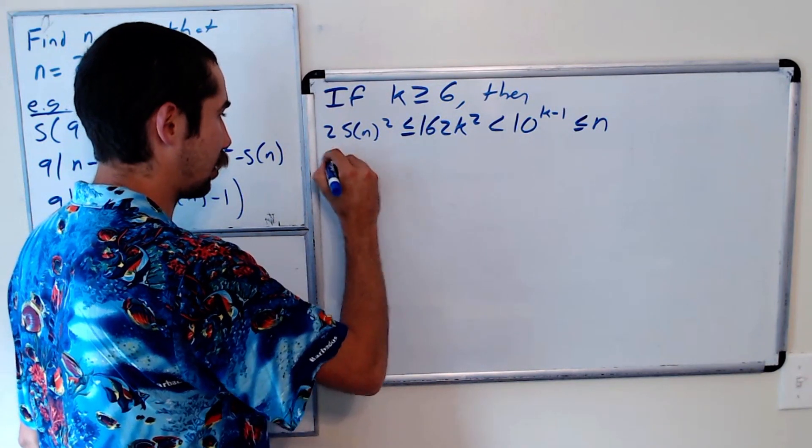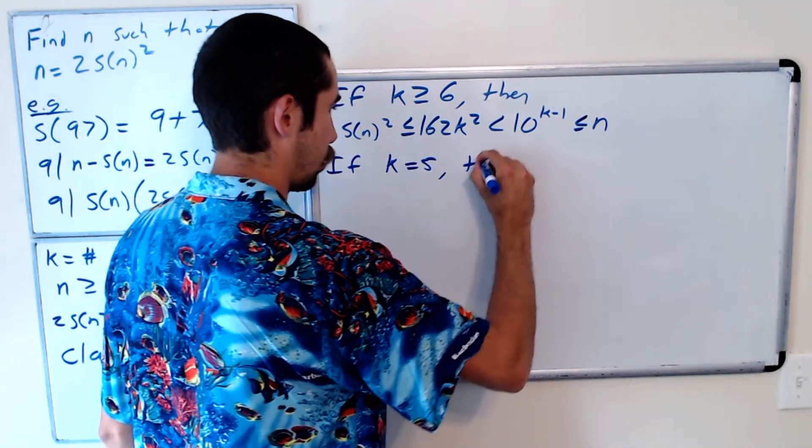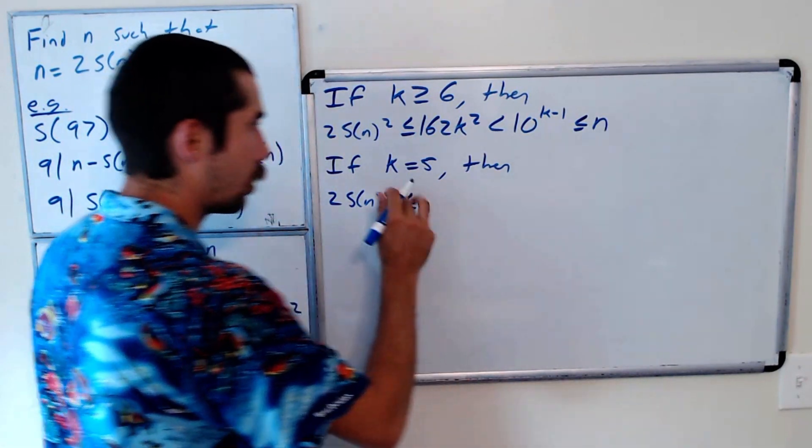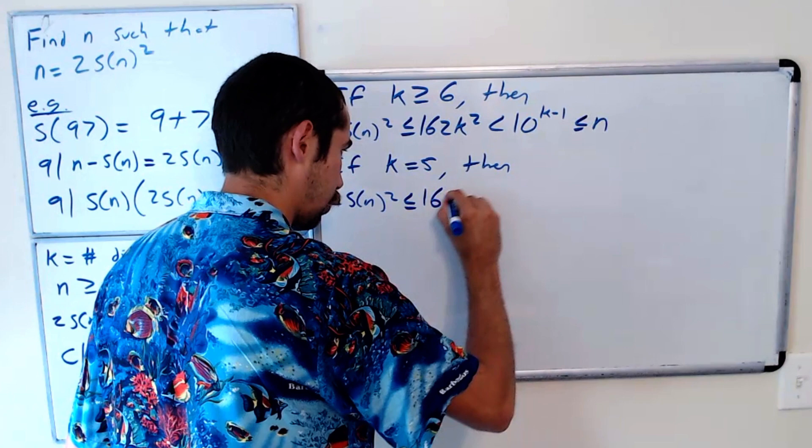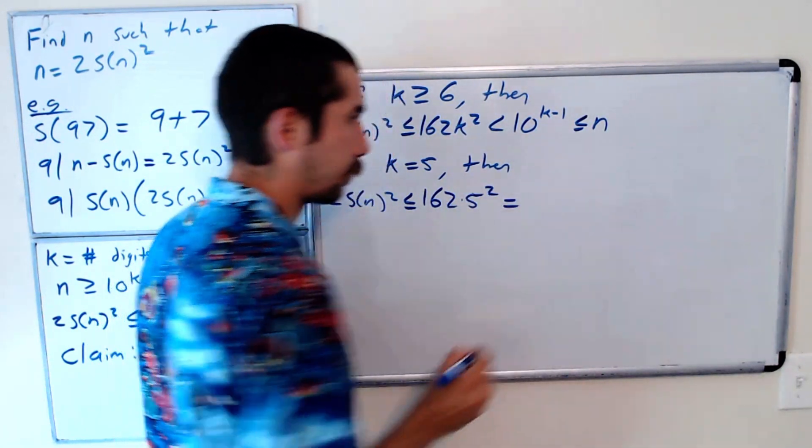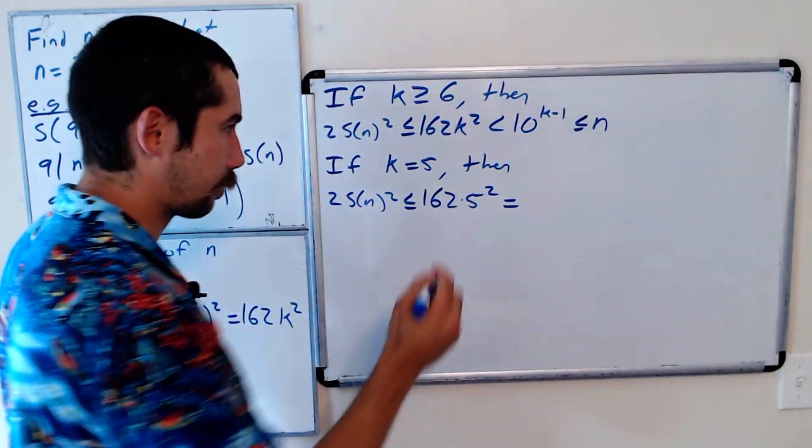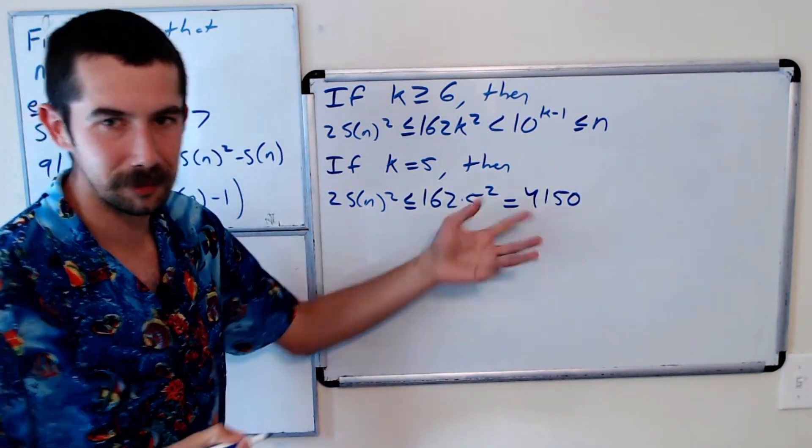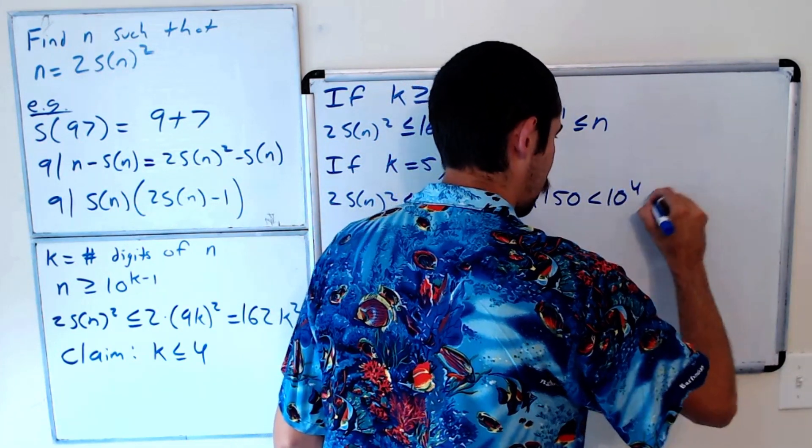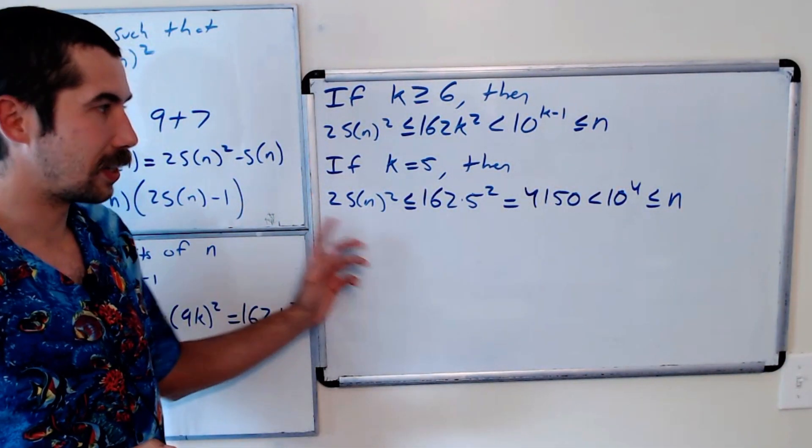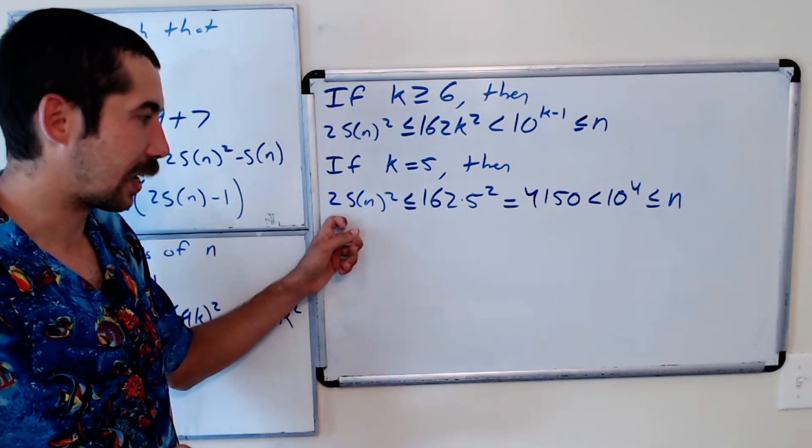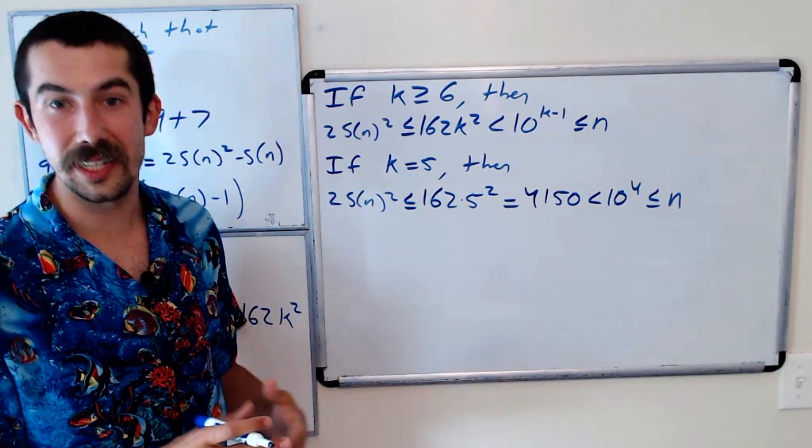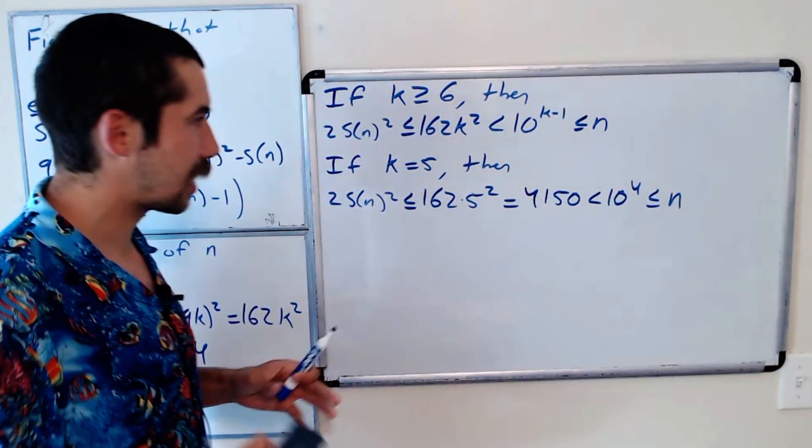The k equals 5 case is even easier. If k equals 5, then 2S(n)² is going to be less than or equal to 162 times 5 squared, which I worked out to be 4,150. Its exact value isn't terribly important. What's the point? It doesn't have enough digits. So this is less than 10 to the fourth, which is less than or equal to n. And so that's another contradiction. Since we have this strict inequality, it cannot be the case that 2S(n)² is equal to n. So we know that k has to be less than or equal to 4.